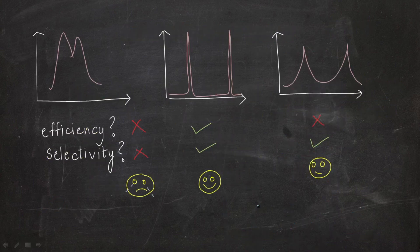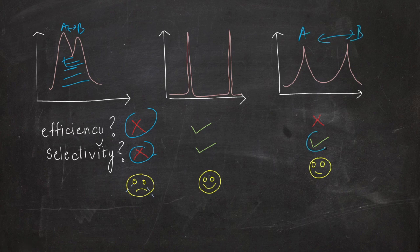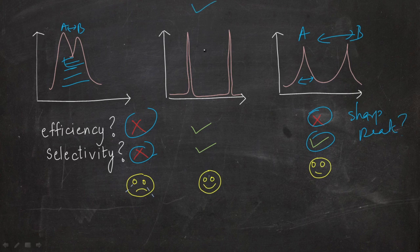Now we look at three graphs. In the first graph, the two peaks A and B are very close — selectivity is not good and efficiency is not good because portions overlap. In the third graph, the two peaks are well separated so selectivity is okay, but the peaks are not sharp enough, so efficiency is not very good. In the second graph, both peaks are well separated and the peaks are sharp with minimal zone broadening — so it is both efficient and selective. This is the ideal separation.